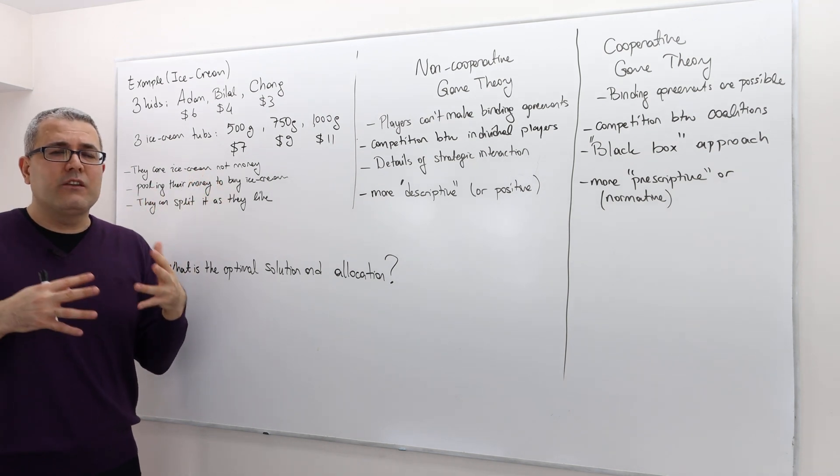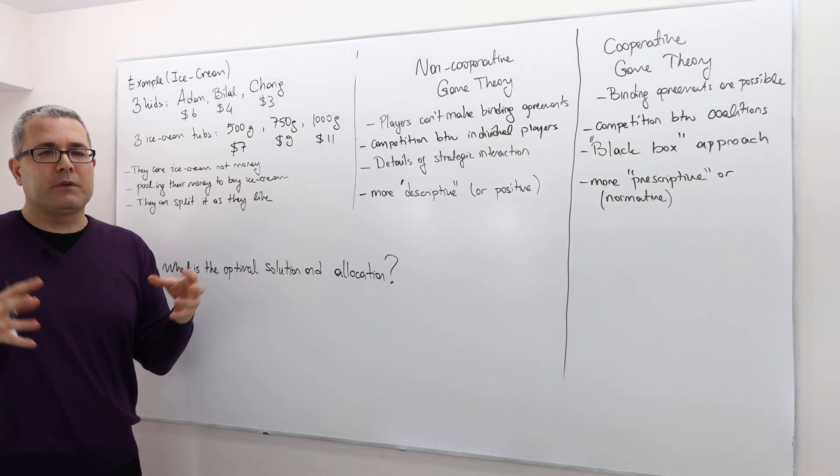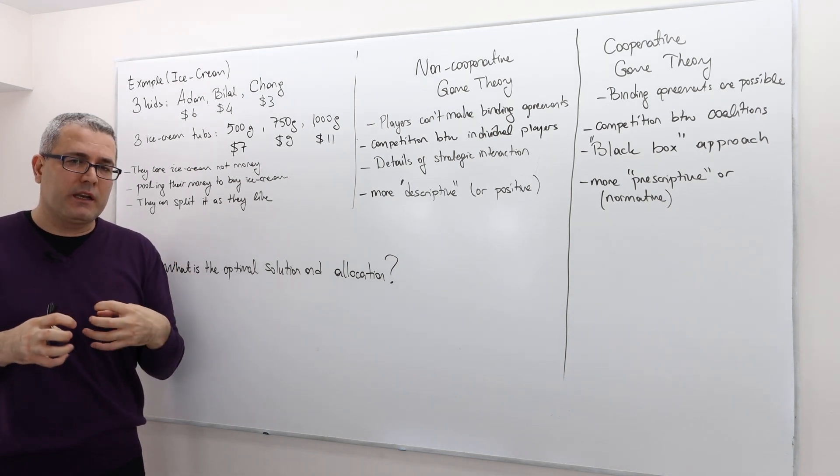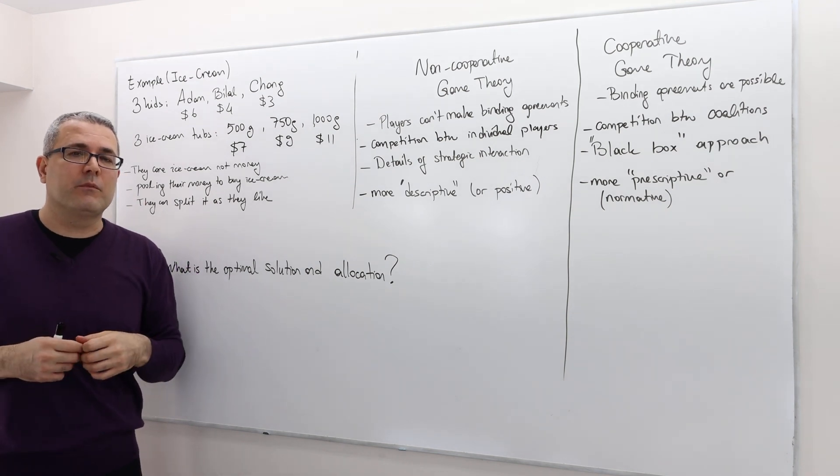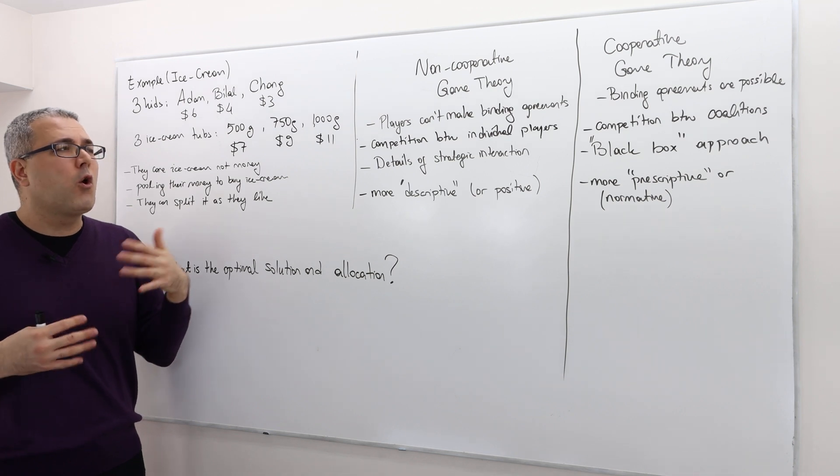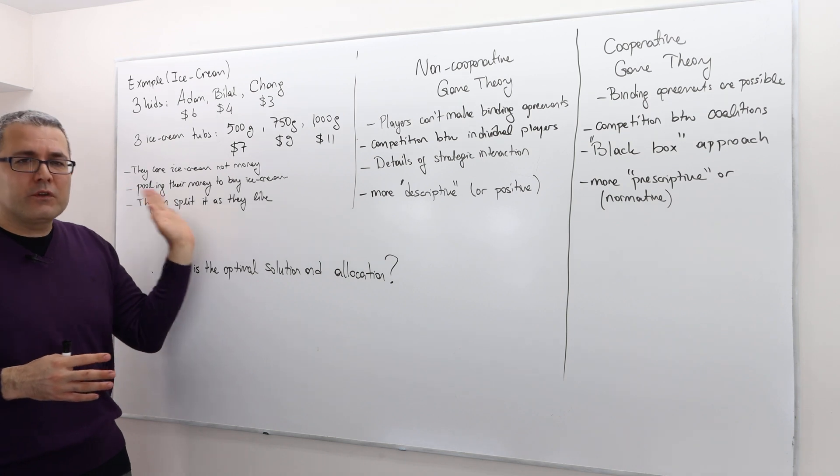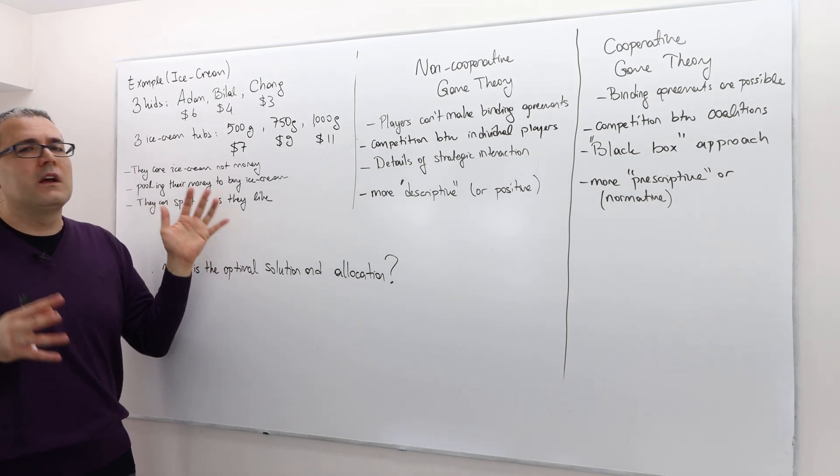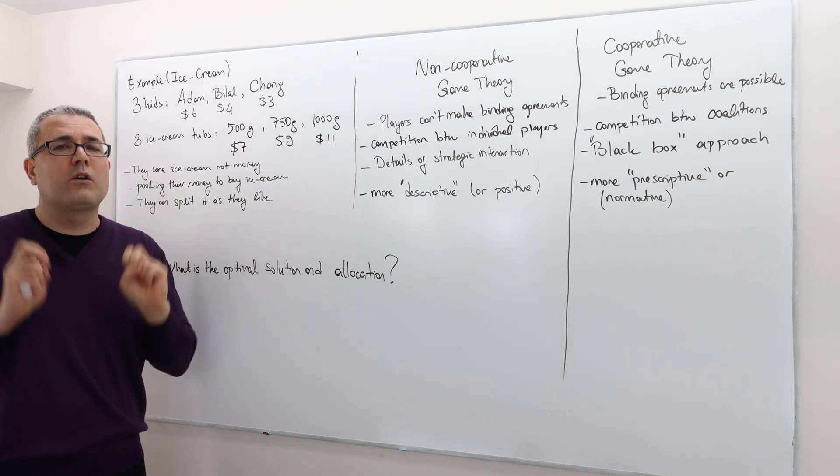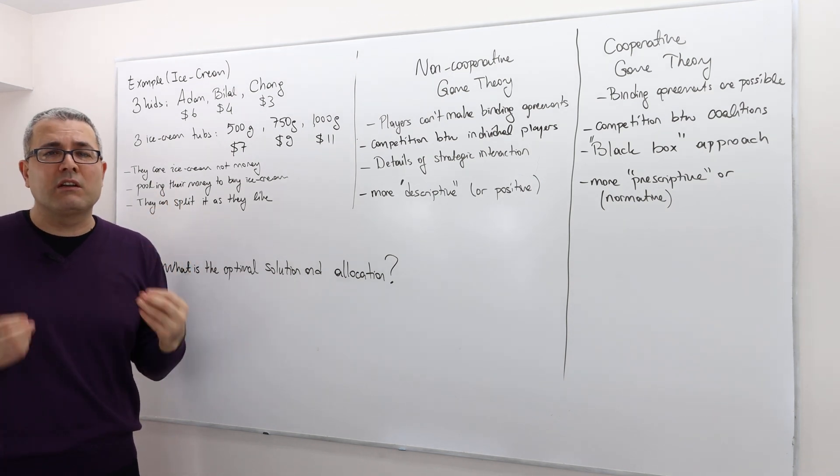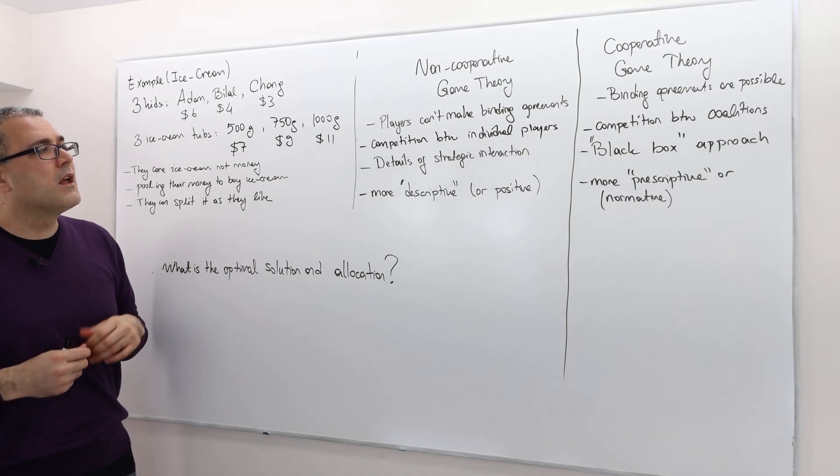So that kind of means, if you are analyzing sort of a strategic environment between players who know one another, who already have some history, and who will have probably some future together, then cooperative approach would make more sense. But again, you can sort of analyze this environment with a non-cooperative approach and by specifying those quote-unquote potential agreements that they can also decide in between each other.